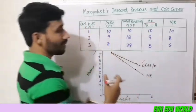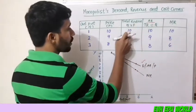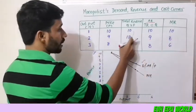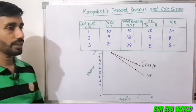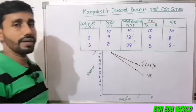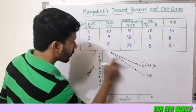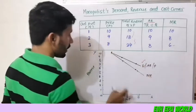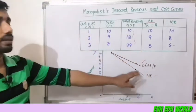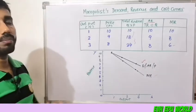Marginal Revenue is the additional revenue obtained from each additional unit. At output 1, MR is 10; at output 2, MR is 8; and at output 3, MR is 6. The Marginal Revenue curve lies below the Average Revenue curve, which is also the demand curve.